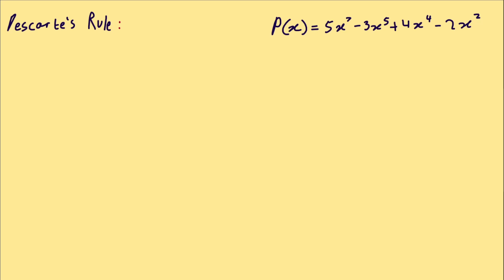I'm going to explain Descartes' rule and how to use it to find the real rational zeros of a polynomial. So there's two parts.